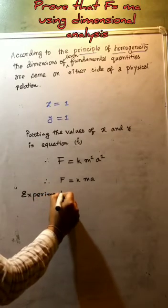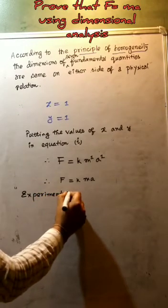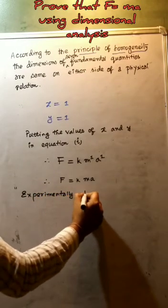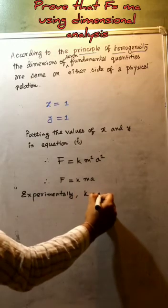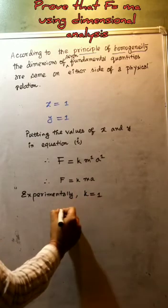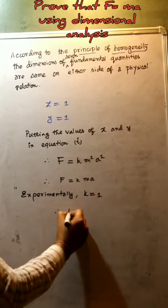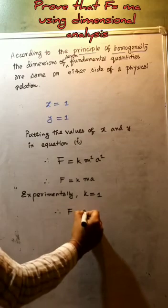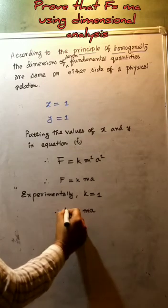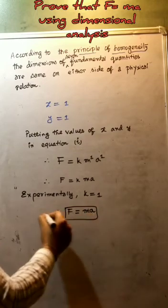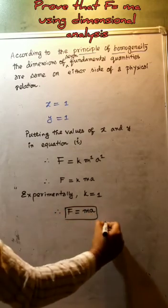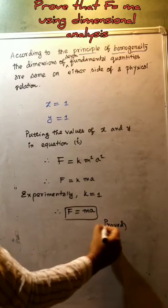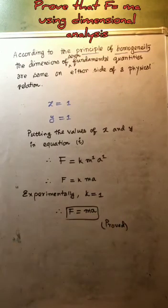Experimentally, the value of the constant of proportionality K is equal to 1. Therefore we get the expression of force which is equal to the product of mass and acceleration — F equals ma. This is proved.